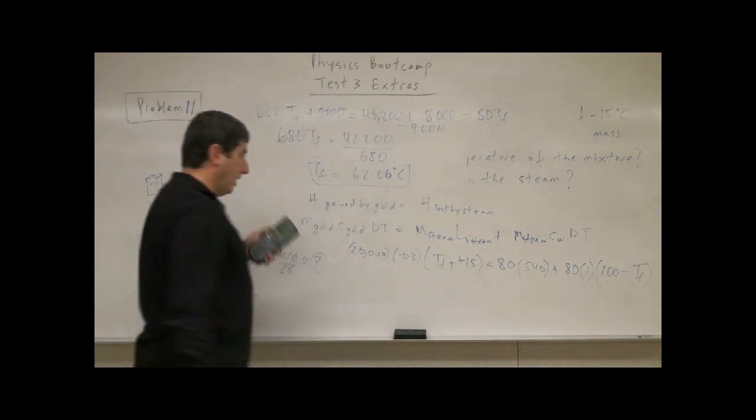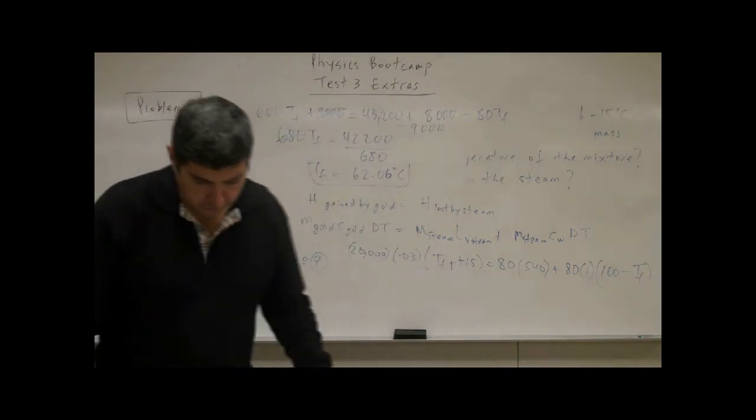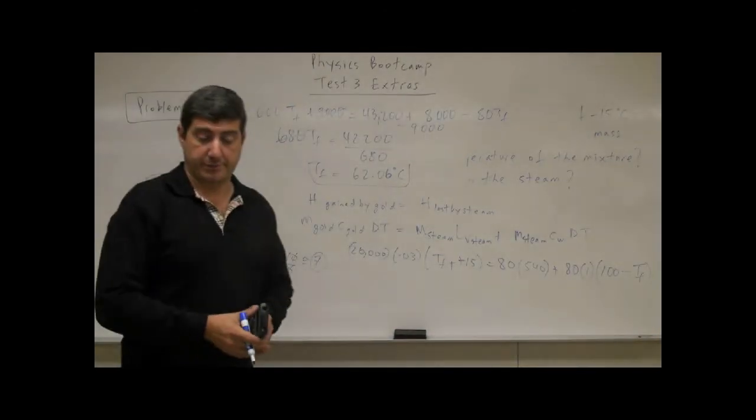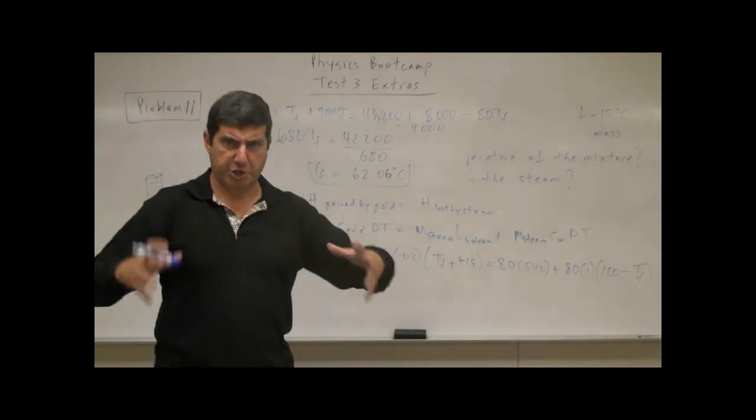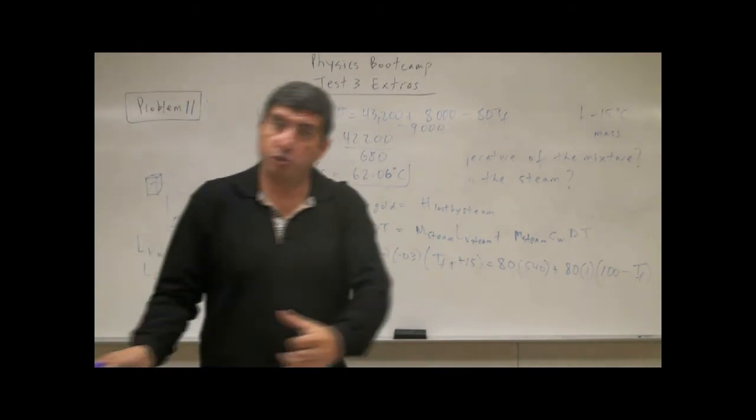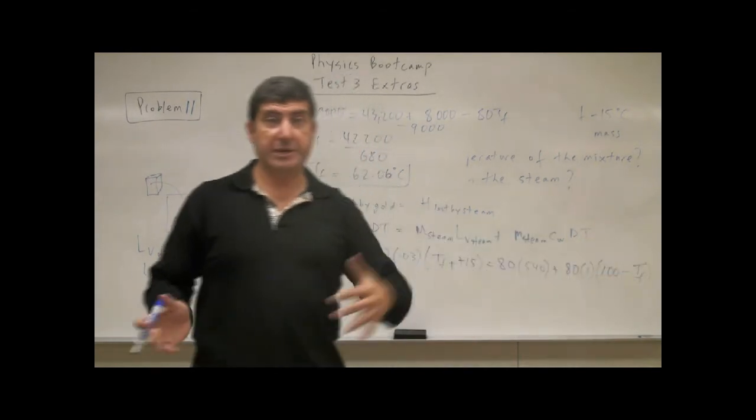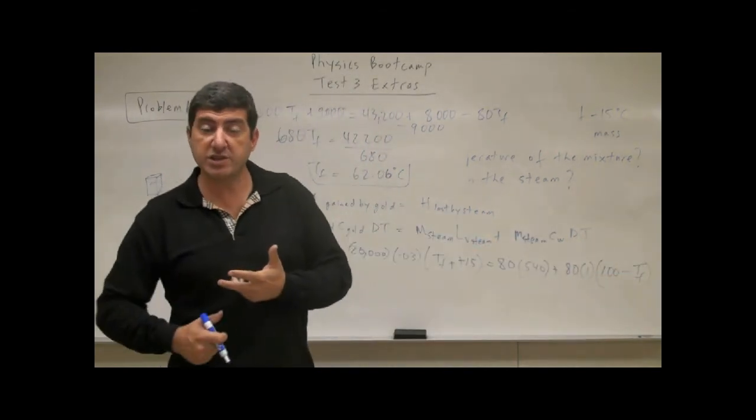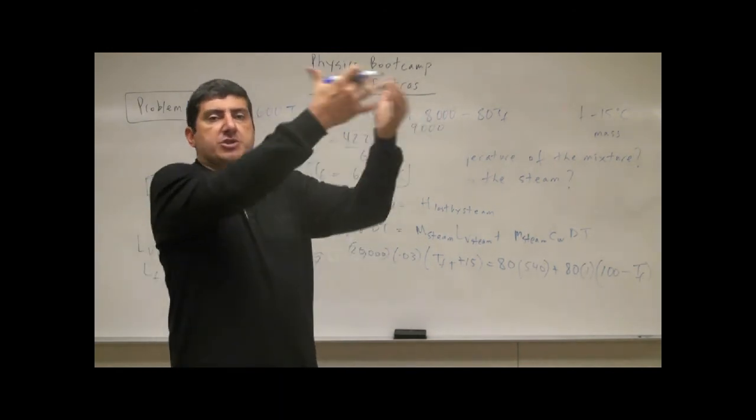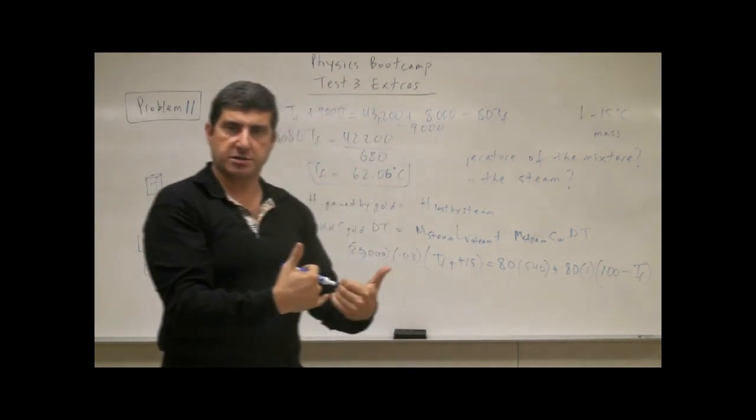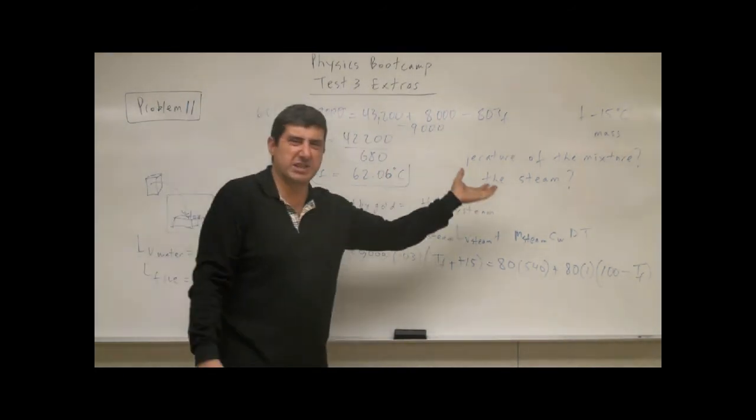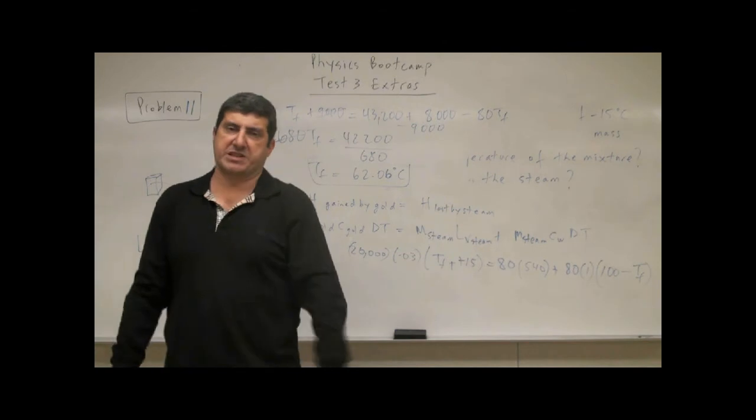So that is the final temperature. So what happened here? The big huge block of gold went all the way from negative 15 all the way to 62. That's a big change. That's because its specific heat is very, very low. The steam condensed from 100, turned into water. There wasn't really that much steam. There was only 80 grams of steam, 20,000 grams of gold. So the steam turned into water, then cooled down all the way to 62.6.